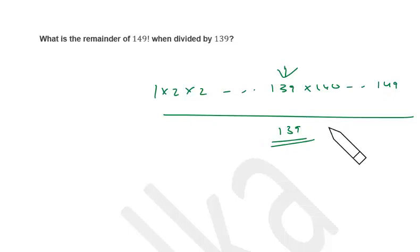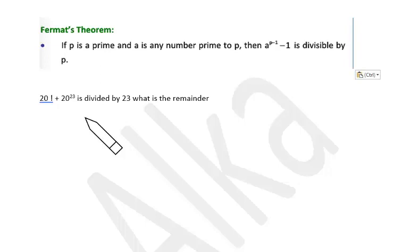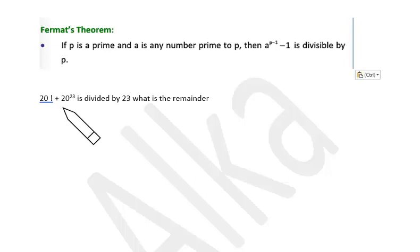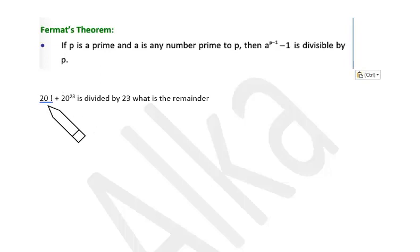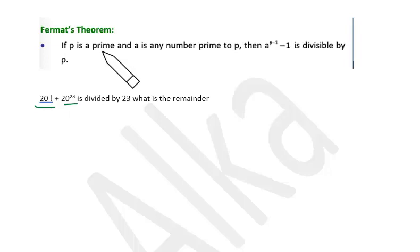Now we have a question that combines two theorems: Fermat's theorem and Wilson's theorem. We need to find the remainder when 20 factorial plus 20 raised to the power 23 is divided by 23. This part — 20 factorial — is solved by Wilson's theorem, and this part — 20 raised to 23 — is solved by Fermat's theorem.